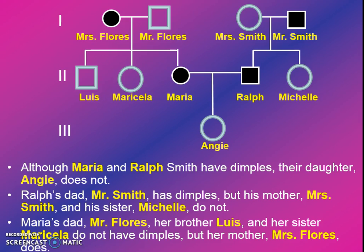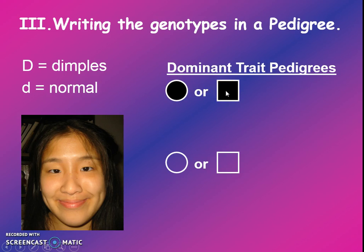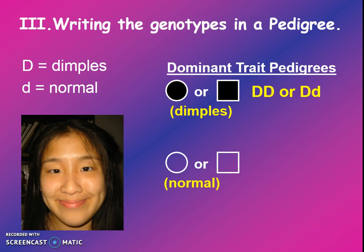That was pretty tough. Not only do we have to be able to read the relationships between people, we're also going to have to figure out the genotypes for all of these individuals in future pedigree situations. How do we write the genotypes in a pedigree? Well, it depends if our pedigree is a dominant trait pedigree or a recessive trait pedigree. Let's say it's our dimple scenario, which is a dominant pedigree. That would mean big D represents dimples and little d is normal. Filled-in circles or squares represent people who have dimples, and their genotypes are different from people who are normal or not filled in. The possible genotypes for someone with a filled-in symbol could be DD or Dd.